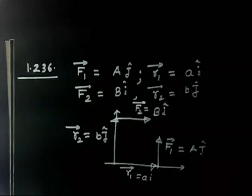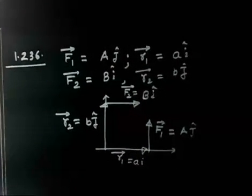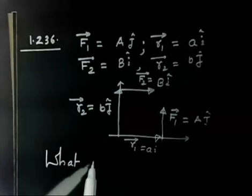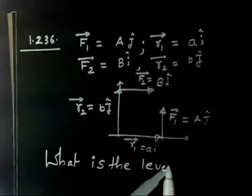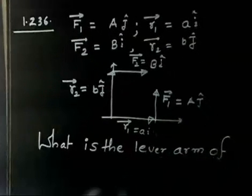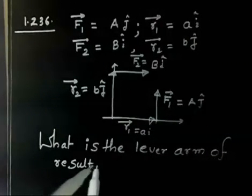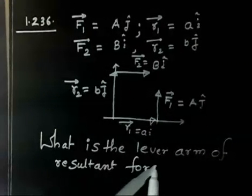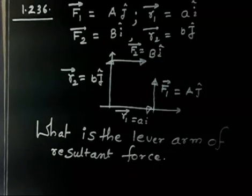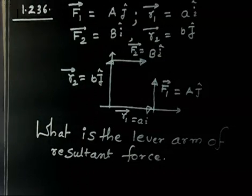The question is asking: what is the lever arm of the resultant force? So first find out the total moment, then find out the total force, and then divide the magnitude of total moment by the magnitude of total force — that will give you the lever arm.